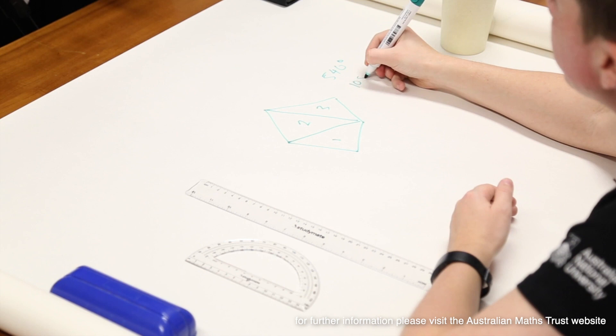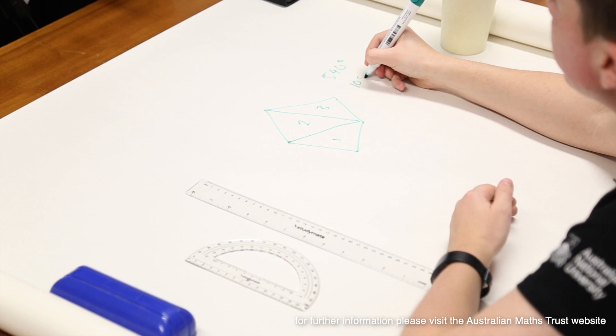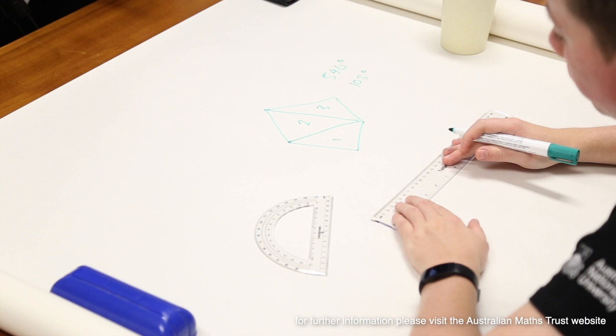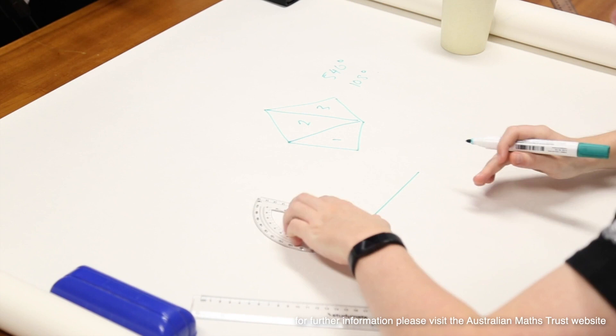To draw our regular pentagon, we need to pull out our trusty protractor and ruler and measure exactly. I want you to draw a pentagon with side length 34 millimetres, then get your protractor out and measure 108 degrees.